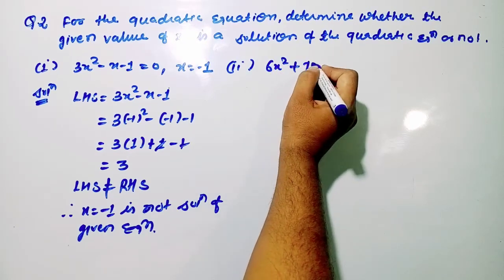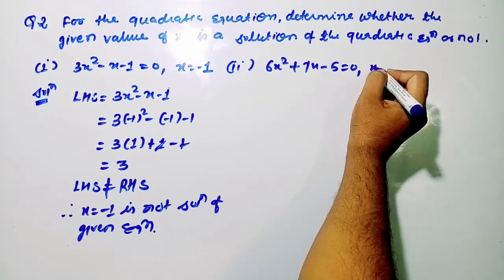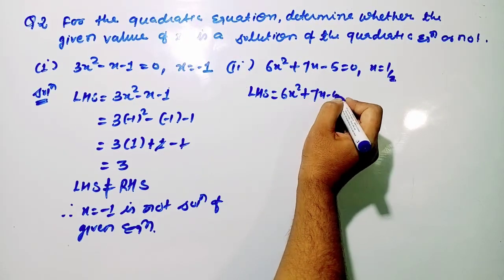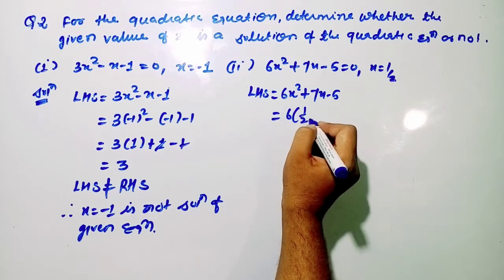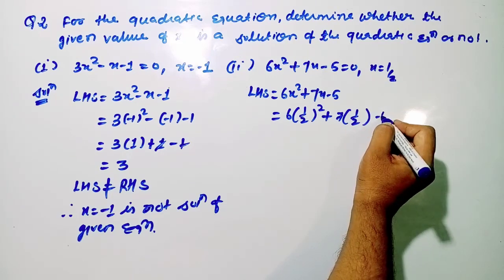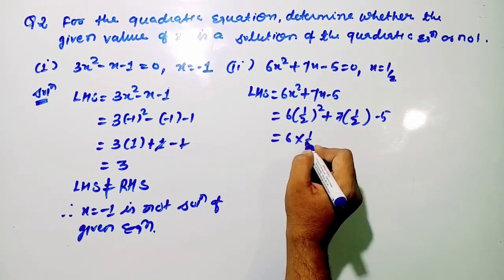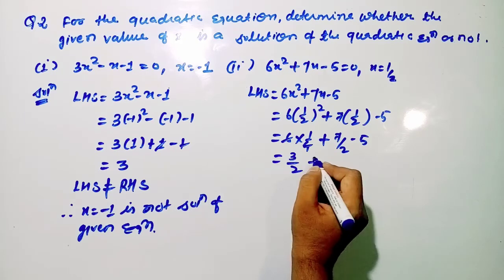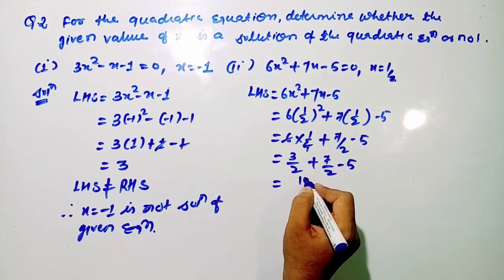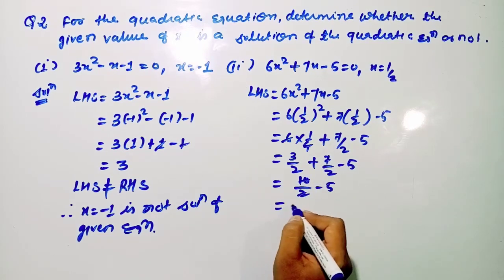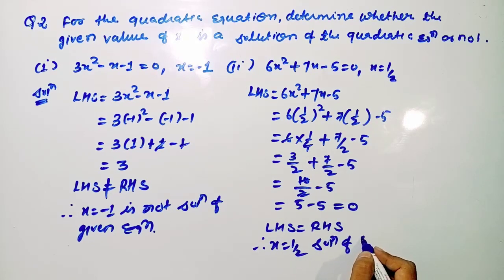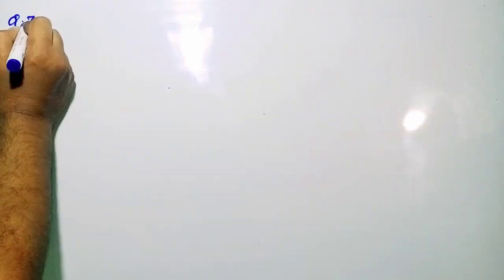Let us see the second question: 6x² + 7x − 5 = 0, where x = 1/2. Substituting into LHS: 6(1/2)² + 7(1/2) − 5 = 6(1/4) + 7/2 − 5 = 3/2 + 7/2 − 5 = 10/2 − 5 = 5 − 5 = 0. LHS equals RHS, so x = 1/2 satisfies the equation. Therefore, x = 1/2 is a solution of the given quadratic equation.